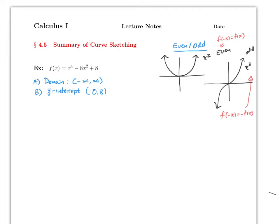So for part C, f(−x) is going to be (−x)⁴ minus a times (−x)² plus a, and notice that you end up with exactly the same function you started with. That means the function is even, so the graph has to be symmetric about the y-axis.